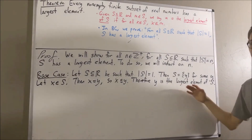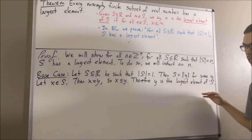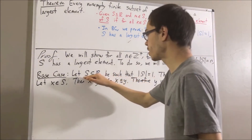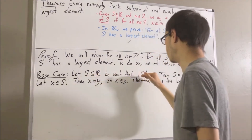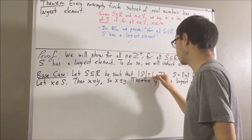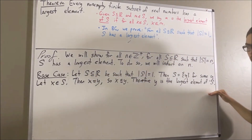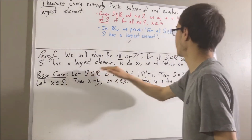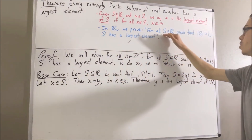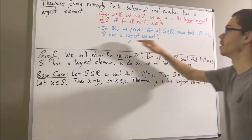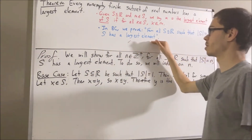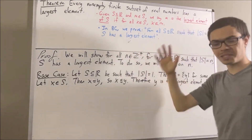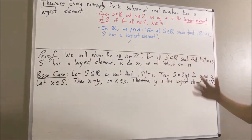So y is the largest element of s, which means s has a largest element. Putting this together: given a subset of real numbers with one element, s has a largest element. Since s was arbitrary, this means for all subsets of real numbers with one element, s has a largest element. So we have proven exactly what we wanted to prove, and this completes the base case.